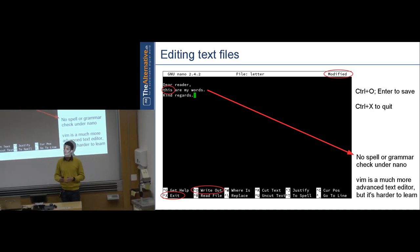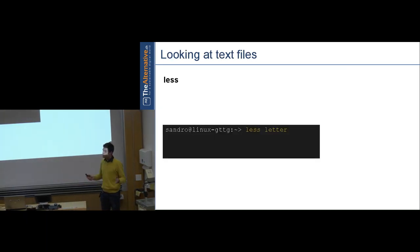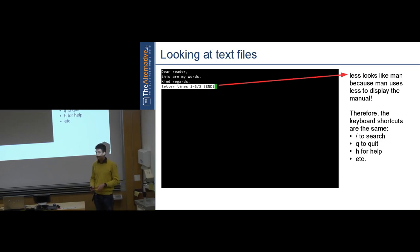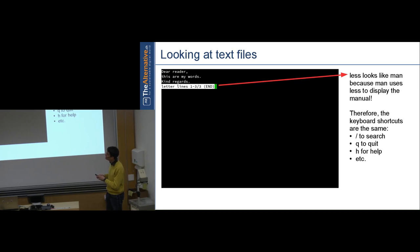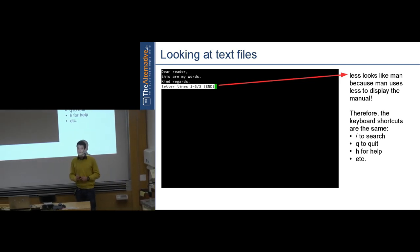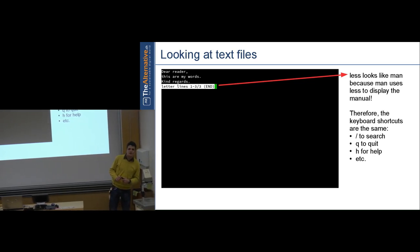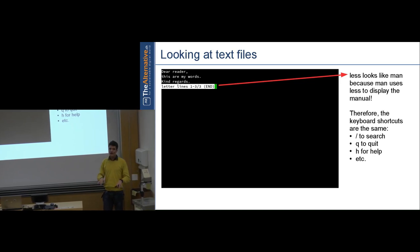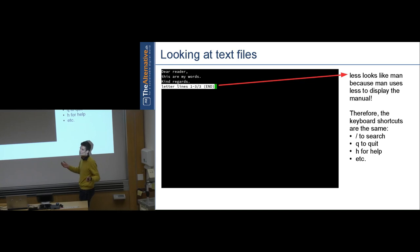To view files, use 'less' — it opens in read-only mode so you won't accidentally modify anything. It shows line count and tells you when you've reached the end. The keyboard shortcuts are identical to man pages — slash to search, q to quit, h for help — because man actually uses less internally: man opens a documentation file with less.